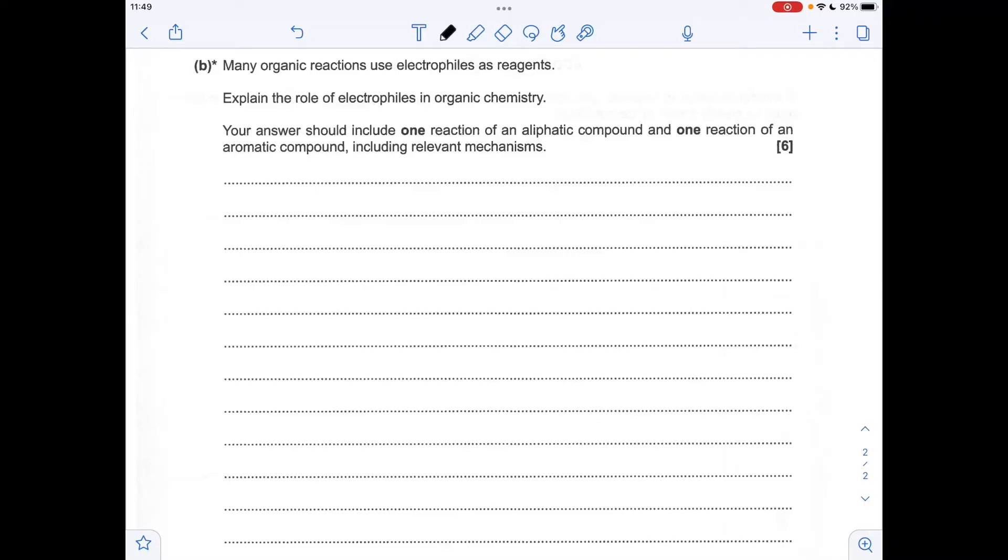Moving on to part B now, so obviously it's quite open-ended this question. There's loads of possible mechanisms you could use, so long as it's an electrophilic reaction. One has obviously got to be aliphatic, and one's got to be aromatic. So I've chosen one of each. I'll give you the other options, but I'm not going to go through every single mechanism, otherwise I'll be here forever. So the first thing we need to say really is what is an electrophile? An electrophile is an electron pair acceptor.